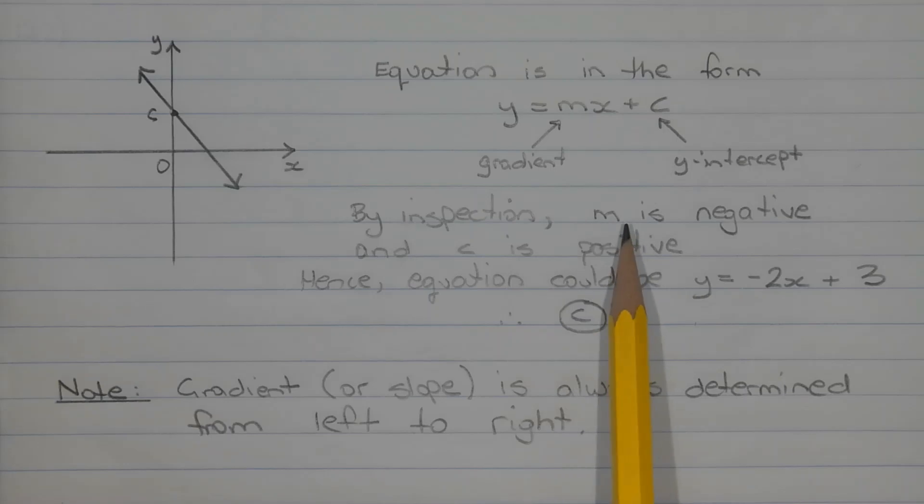So by inspection, m is negative, c is positive, hence the equation could be y equals negative 2x plus 3. Therefore the correct answer is option c.